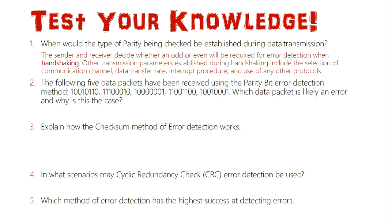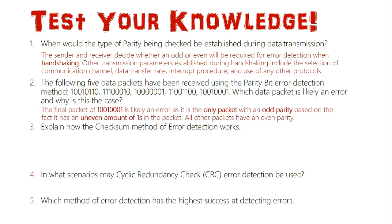It is also at the handshaking stage that whether a parity bit will be odd or even is established. Question 2: Which of these five packets of data has an error? We need to know whether we're looking for odd or even parity. If I start counting ones, one packet sticks out — the final packet: 10000001 — and it's likely in error because it's the only packet that has an odd parity, with three ones.